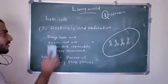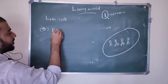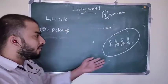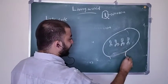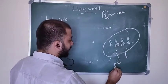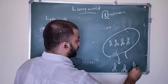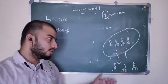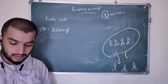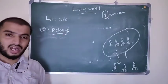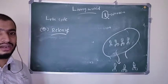The last step of the lytic cycle is release. So many bacteriophage copies are produced inside the bacterial cell. Finally, the bacterial cell undergoes lysis — it breaks — and all the copies of bacteriophages are released outside the bacterial cell. That is called release. These are the steps of the lytic cycle: adsorption, penetration, synthesis, assembly and maturation, and release. Bacteriophages follow the lytic cycle under favorable conditions.